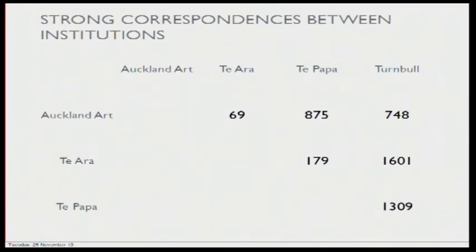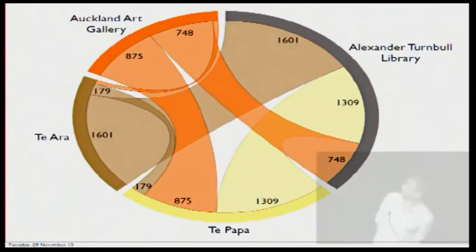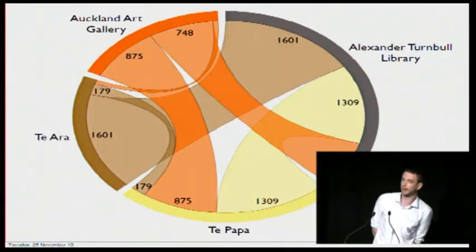Here's a coincidence matrix of the matches across institutions. Auckland Art Gallery to Tiara: 69 strong matches, 875 to Te Papa, and so on. I find the coincidence matrix a little hard to read, so I turned it into a chord diagram. A chord diagram divides the perimeter of a circle up into parts and then connects across to show linkages between the entities. The largest commonality is between Tiara and the Alexander Turnbull Library, where there were 1,601 strong matches, and only a very small number — 69 and 179 — between Tiara and the Auckland Art Gallery and Tiara and Te Papa respectively. Lots of crossover between the others though.